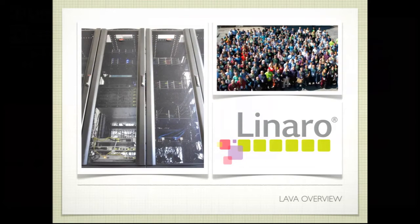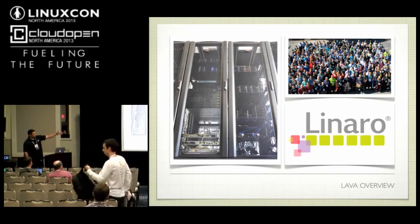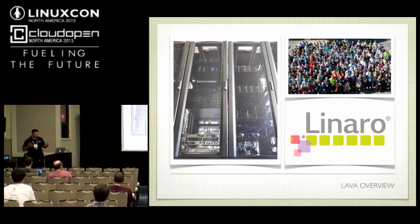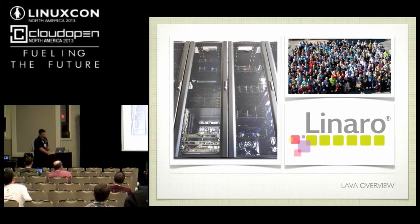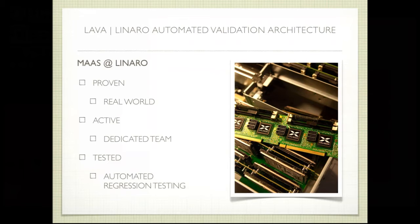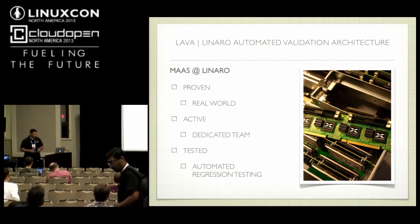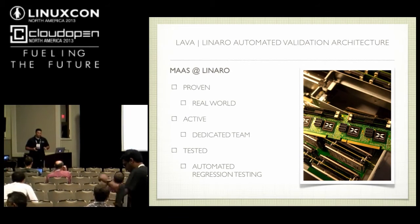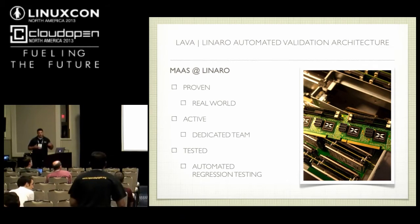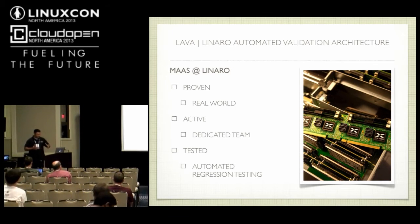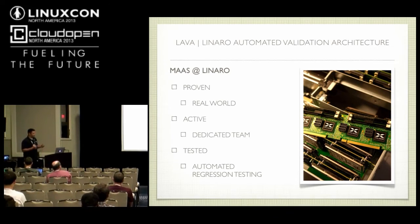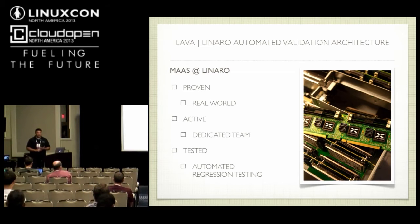I'm going to give you an overview of LAVA. You can see here one of our racks with all the boards in it — we basically have lots of hardware at our headquarters in Cambridge. At Linaro, LAVA provides metal to developers. It's an access layer to hardware, providing authentication and scheduling. Linaro is always on the cutting edge of technology, so a lot of times there's only a few boards available for developers to use, and LAVA enables them to share these resources. Since its inception in 2011, we've run 70,000 jobs through it at Linaro.